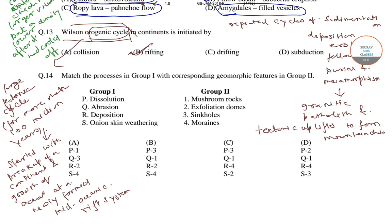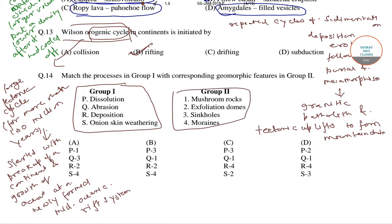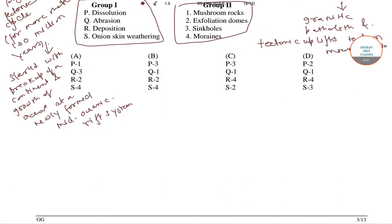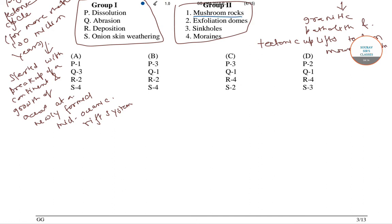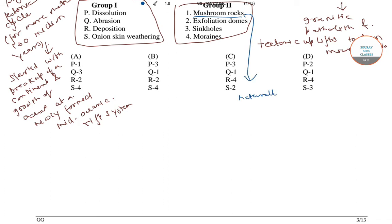Now we will move to the next question, where we have to match the processes in group 1 to the corresponding geomorphic features in group 2. The first one is mushroom rock. These are naturally occurring rocks whose shape resembles a mushroom.